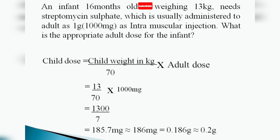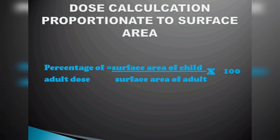Another formula is dose proportionate to surface area. This formula is more complex — you calculate the body surface area using height and weight. Normally a reference table is available in a handy reference book. The formula is: percentage of adult dose equals surface area of child divided by surface area of adult, multiplied by 100. Using this, we can calculate the percentage of adult dose.